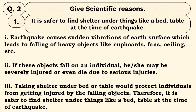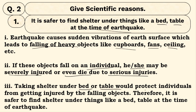Now let's discuss scientific reasons. First: it is safer to find shelter under things like a bed or table at the time of earthquake. Earthquakes cause sudden vibrations of the earth surface, due to which heavy objects like cupboards and ceiling fans can fall. If they fall on a person, they can cause severe injury or even death. Taking shelter under a bed or table protects individuals from getting injured by falling objects. Therefore it is safer to find shelter under such things at the time of earthquake.